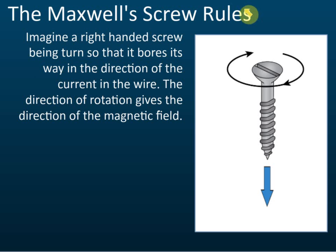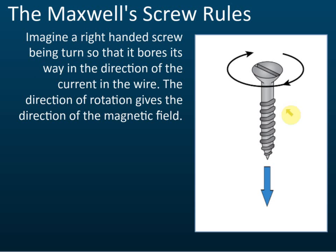For Maxwell's screw rule, imagine you have a screw. The sharp end of the screw points in the direction of the current. When you tighten a screw using a screwdriver, you always turn it clockwise — that clockwise rotation represents the direction of the magnetic field. I seldom use this method, but it may appear in objective questions asking you to identify the field direction using Maxwell's screw rule.